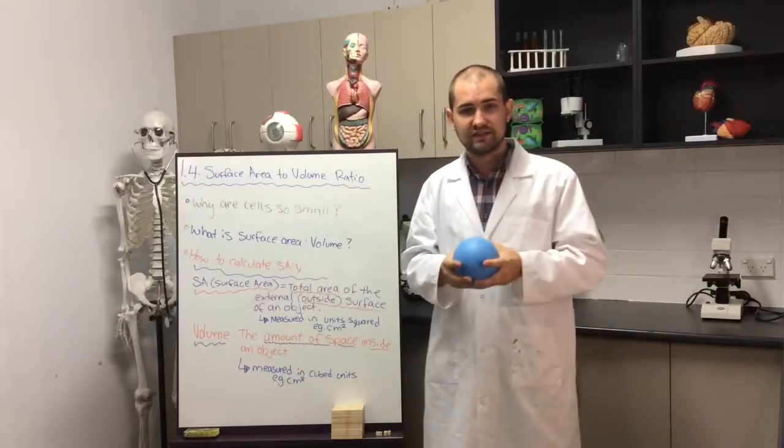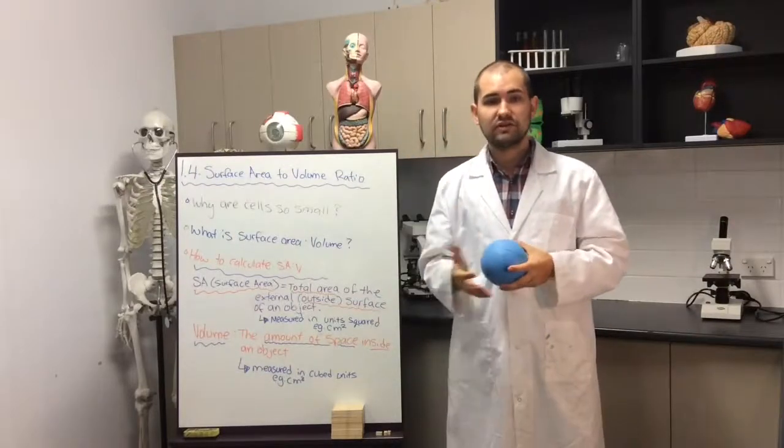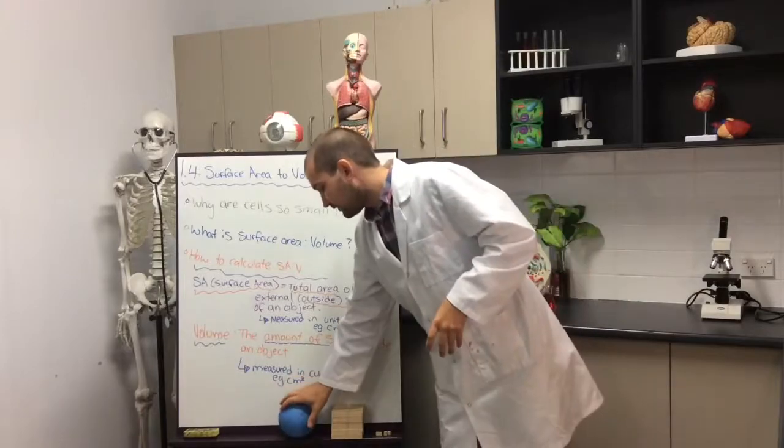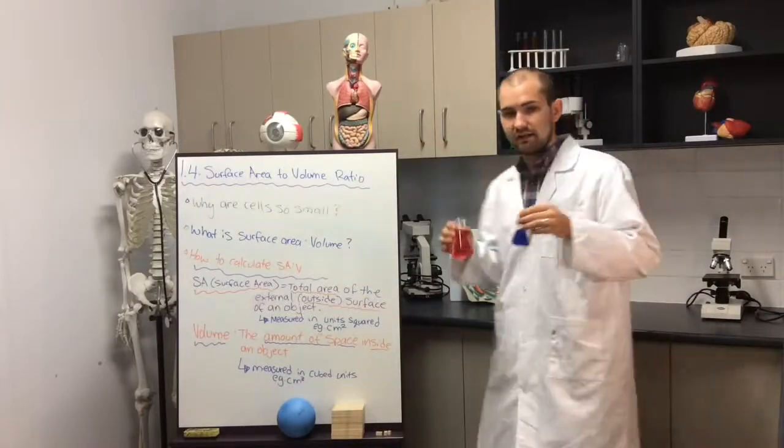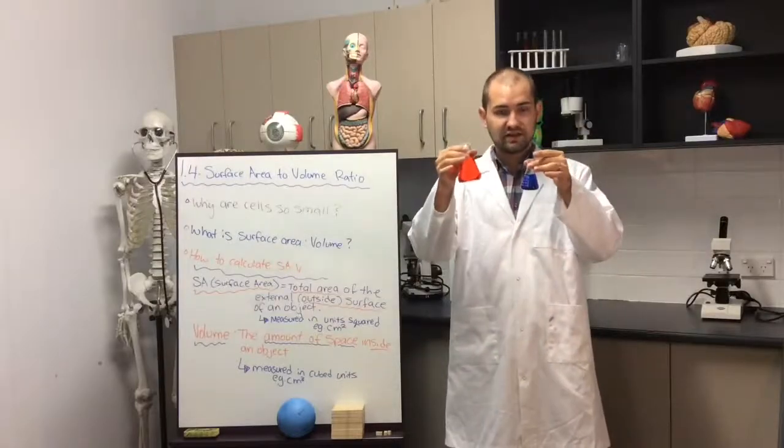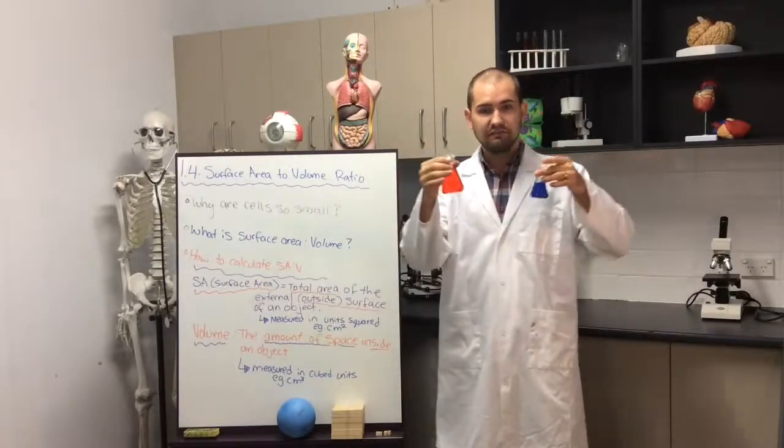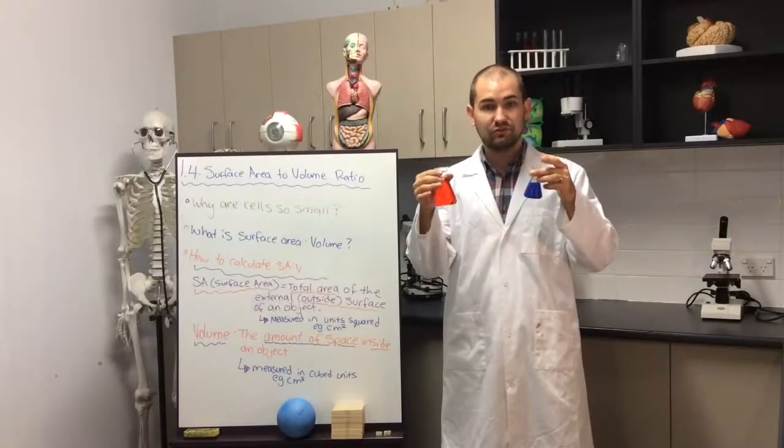So as you increase the size of a cell, the volume also increases. So say I've got two flasks here, a red and a blue one. As I increase the size from a blue to a red one, the amount of volume inside increases.